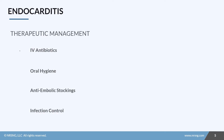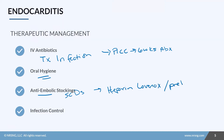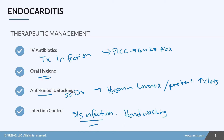Treatment for endocarditis first targets the infection with antibiotics — patients may go home with a PICC line for six weeks of antibiotics to fully eradicate the infection. We also stress oral hygiene given the oral health connection. Anti-embolic stockings or SCDs are applied, and the provider may order anticoagulants like heparin or Lovenox to prevent further clots. Infection control measures including hand washing are essential, and patient and family education covers all of these.